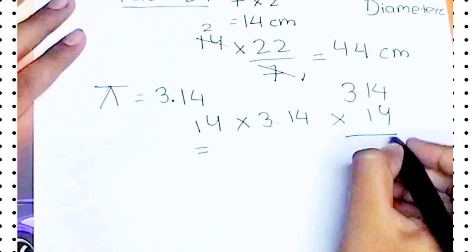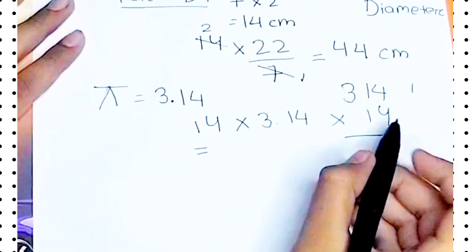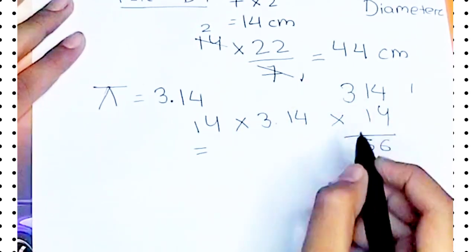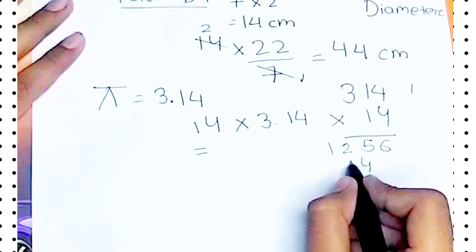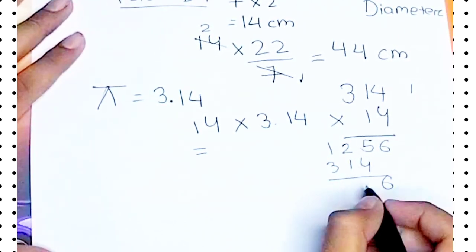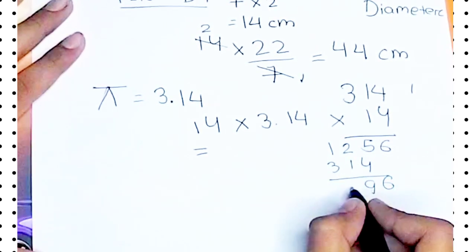4 times 4 is 16, carry 1. 4 times 1 is 4 plus 1 equals 5. 4 times 3 is 12. Then the same thing we are going to copy down here. We get 6, then 9, here we get 3, here we get 4 and a decimal point over here.